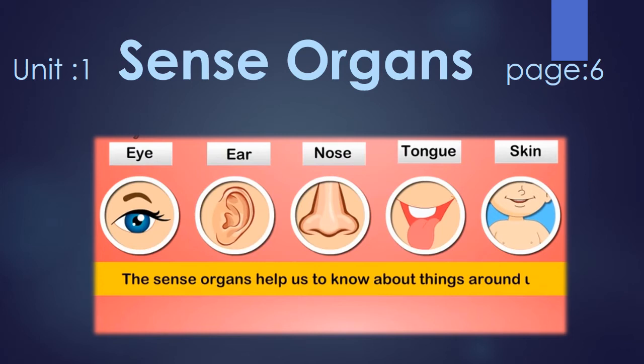We are going to start with unit number one: sense organs, page number six. Basically there are five sense organs. The sense organs help us to know about the world around us. We have five sense organs: eye, ear, nose, tongue, and skin. Every sense organ has a different function in our body and we will study the function of each sense organ in detail one by one.